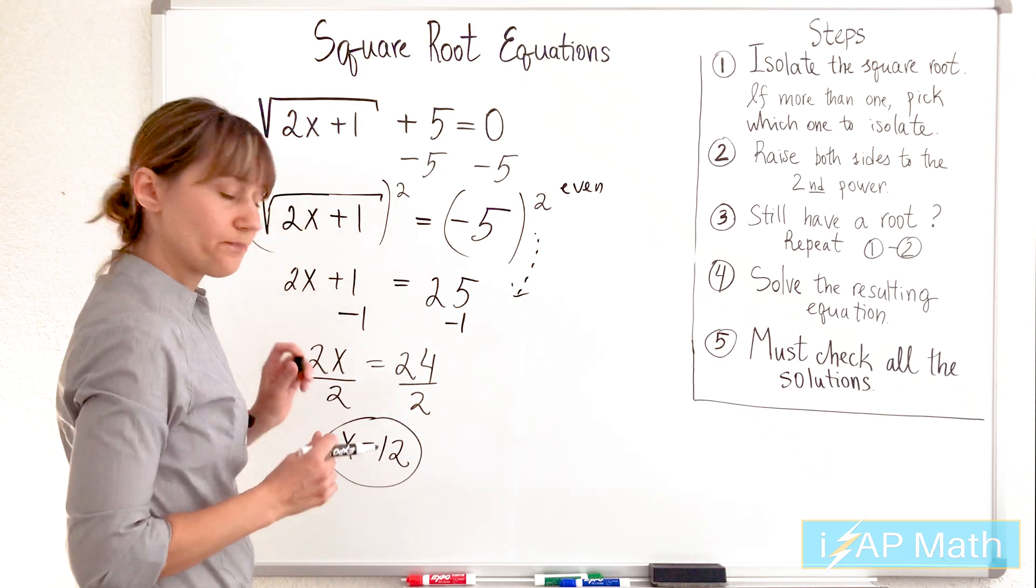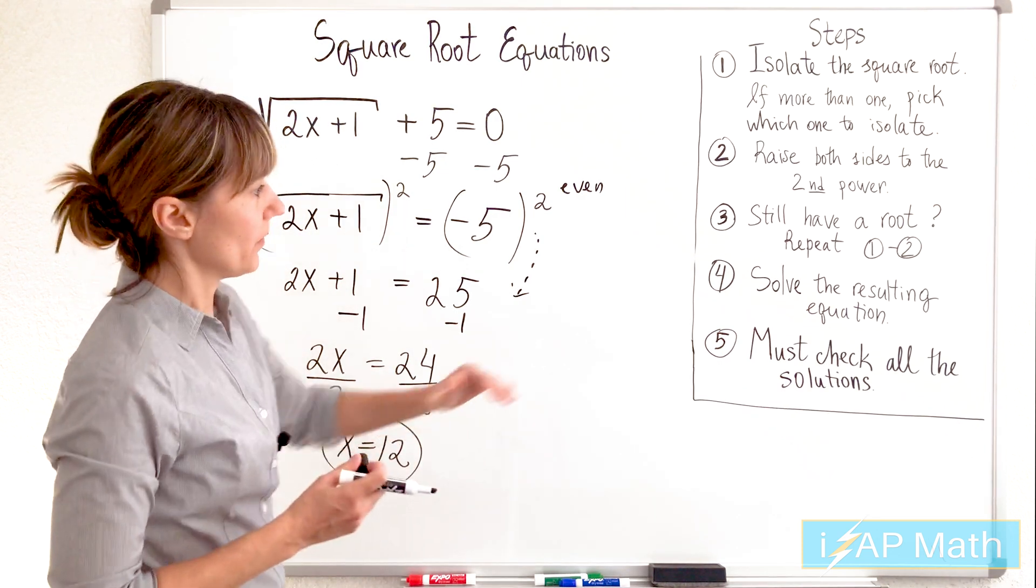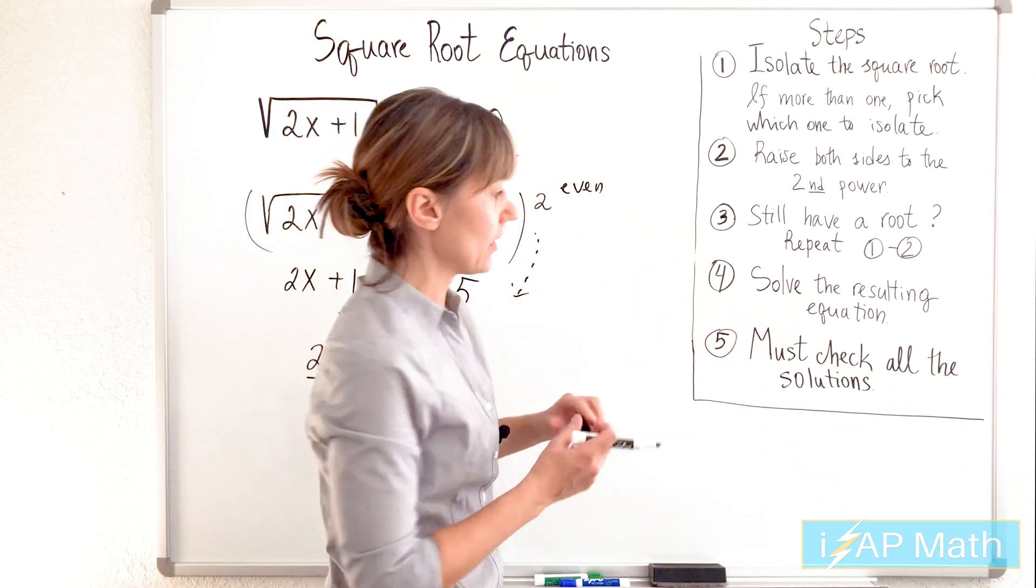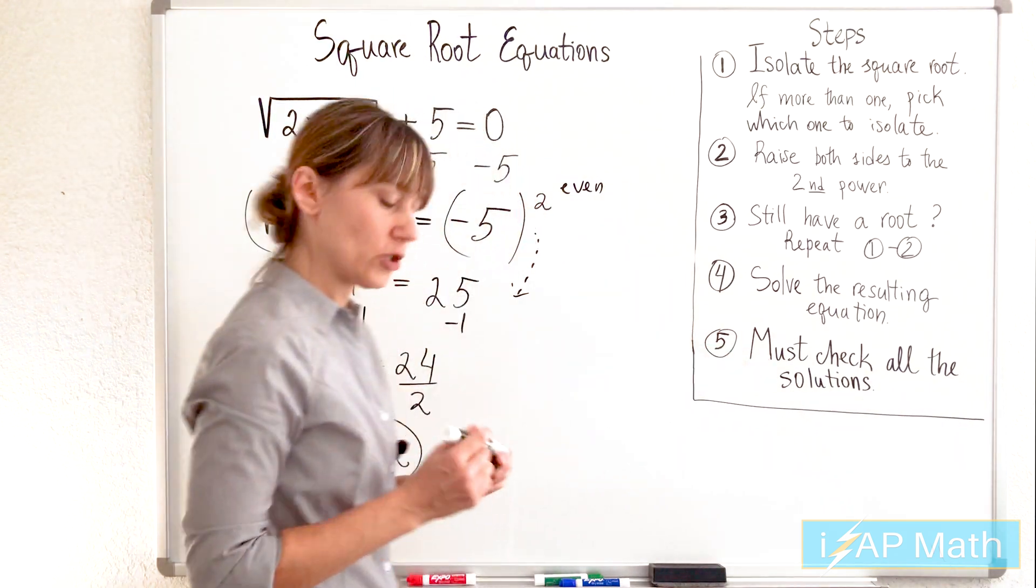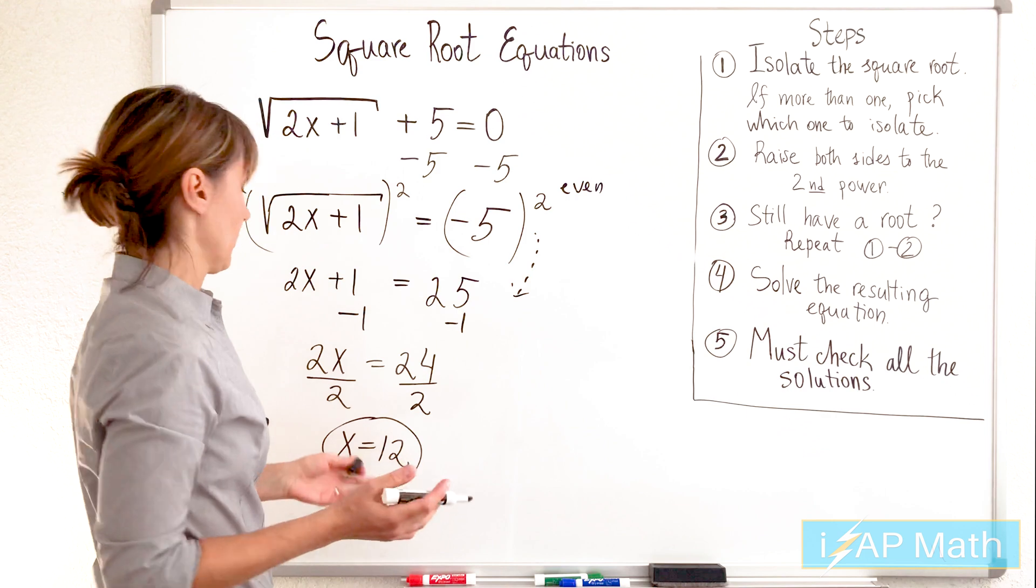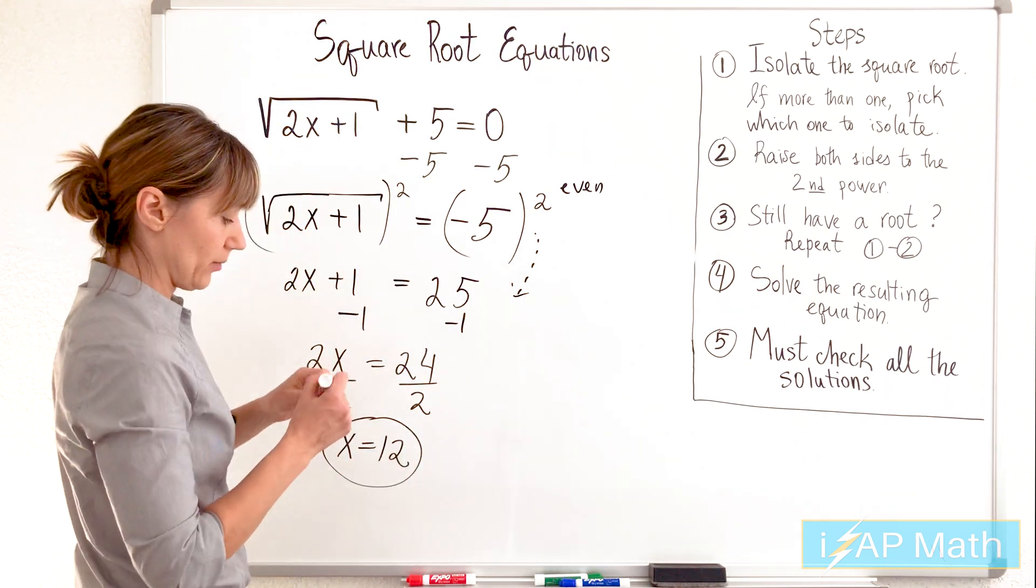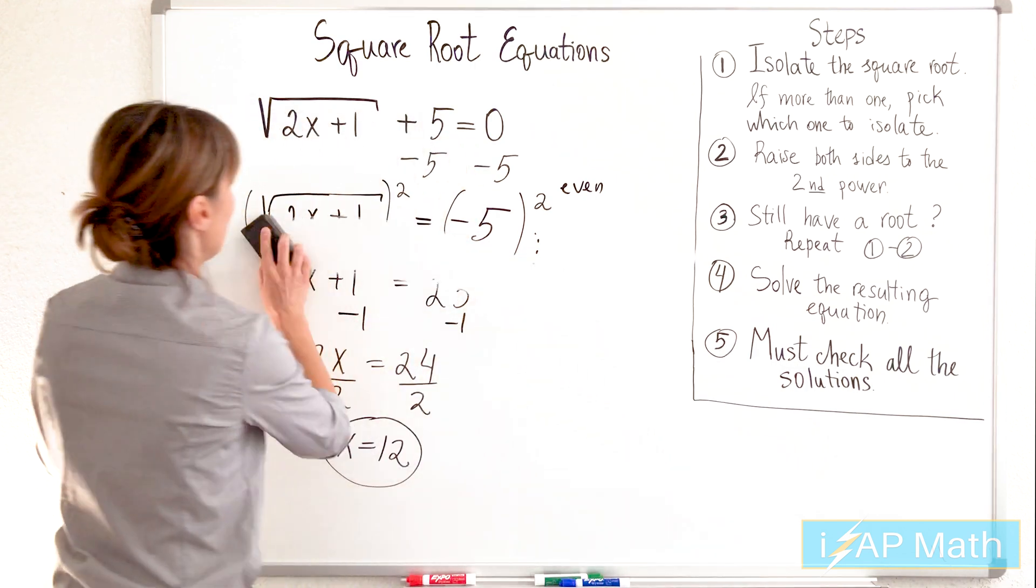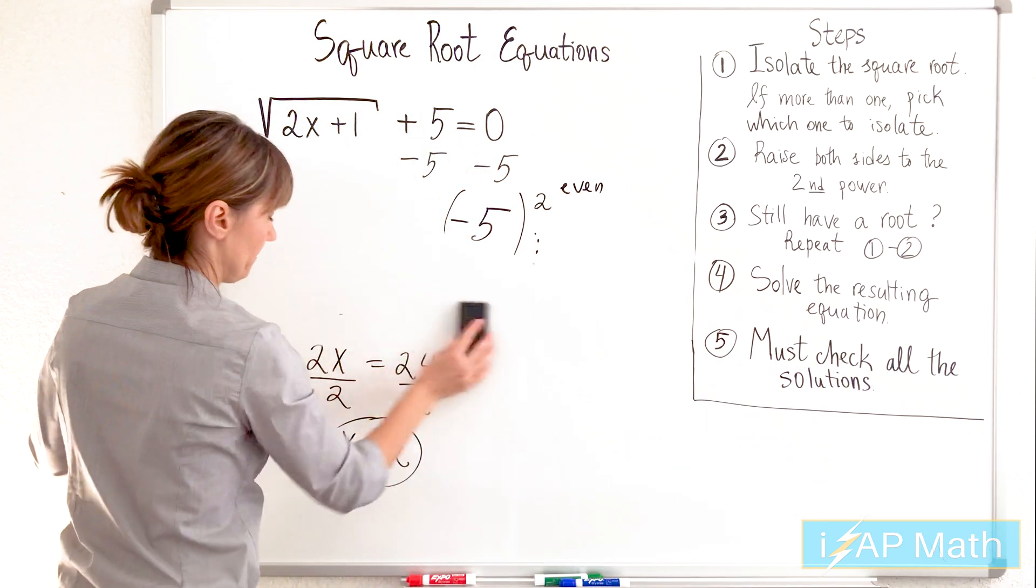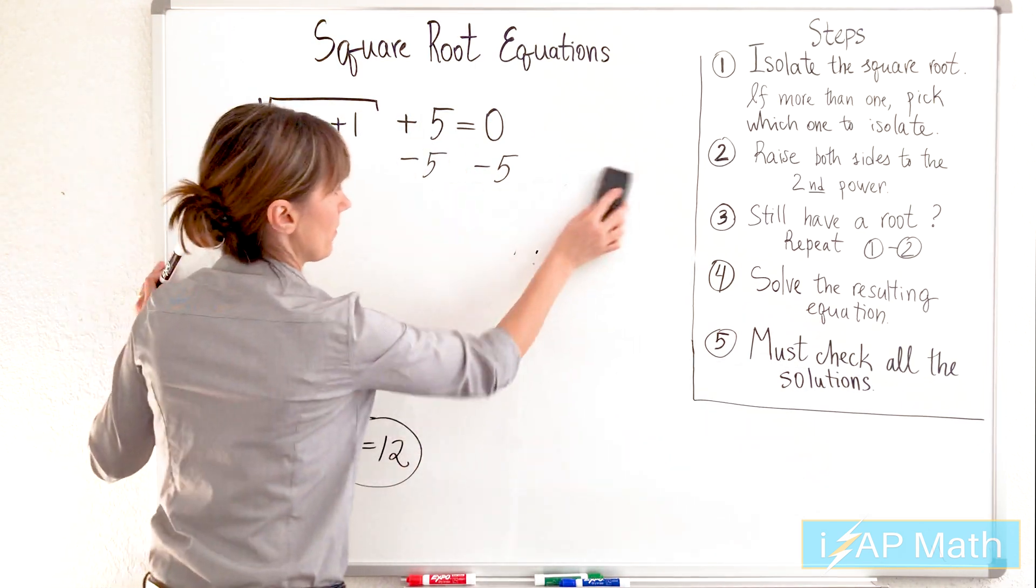We got ourselves a possible solution. And following the steps, the last step says we must check all the solutions. We're going to plug it in. We're going to take 12 and plug it in for x and see what happens. Let's go.